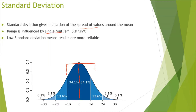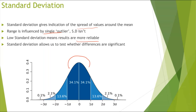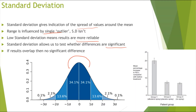A low standard deviation means the results are more reliable. Low standard deviation would mean that more of your data is packed around your mean, so this just means that your data is more reliable. Standard deviation allows us to test whether our differences are significant, and this is done by looking at if results overlap, because if results overlap then there is no significant difference.